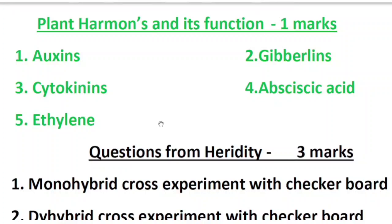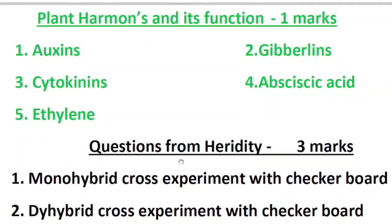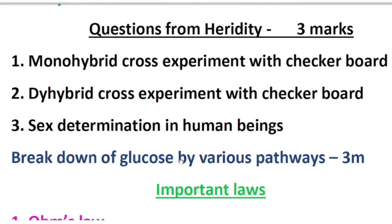Many students asked me to explain in English, so I have explained the same thing again in English. The next one is questions from heredity — three marks, compulsory. You should concentrate on monohybrid cross experiment with checkerboard, dihybrid cross with checkerboard, and sex determination in human beings. These three concepts are very very important and are 100% in your final examination paper, so practice.